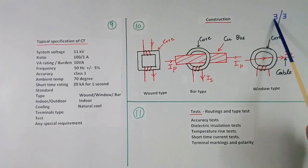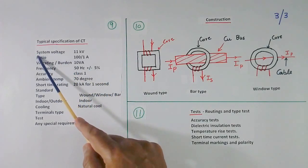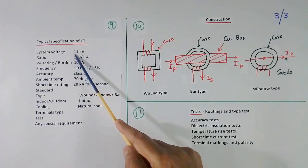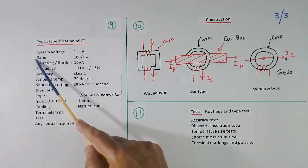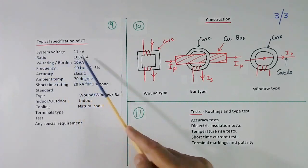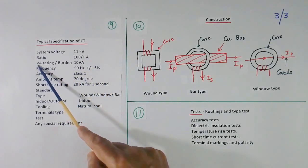This is sheet 3, last sheet. Now these are the typical specifications which we have to ask when we order some CT. We should tell what is system voltage, 11 kV or 100 kV or 1 kV. We should tell the ratio of CT, primary and secondary, 100 by 1 or some other figure.